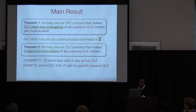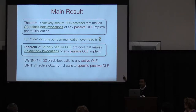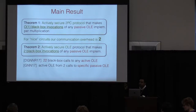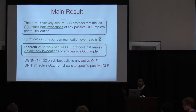If you just wanted to get active OLE from passive OLE — preprocessing random OLEs in an offline/online fashion — you can do it at the rate of two black-box invocations of the passive OLE protocol. Dottling et al. need 22 invocations of a malicious OLE in the black-box case. The work of Ghosh et al. achieves two, but with a tailor-made OLE for a very specific passive OLE.